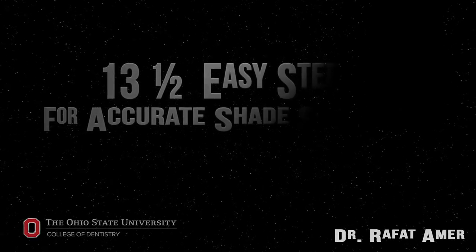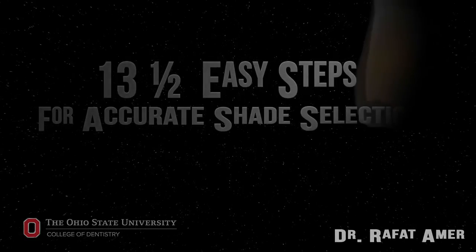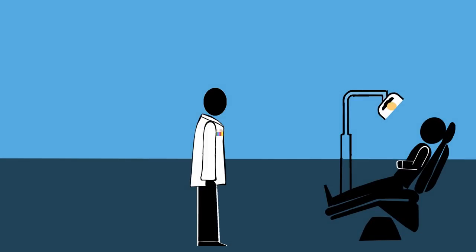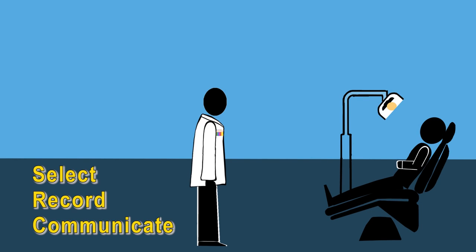Thirteen and a half easy steps for accurate shade selection using the Vita Classical Shade Guide. If you want your restoration to match the color of the surrounding teeth, you need to be able to select the correct shade, record it, and communicate this information to the lab technician.